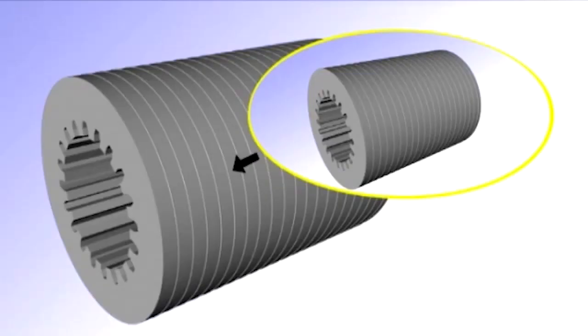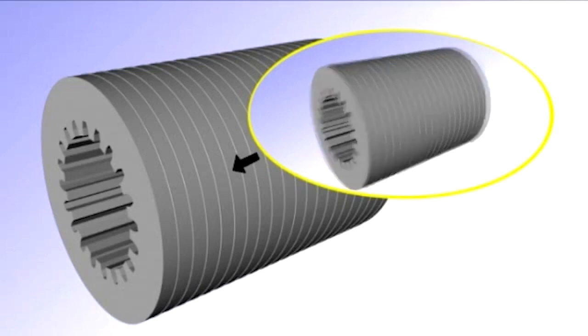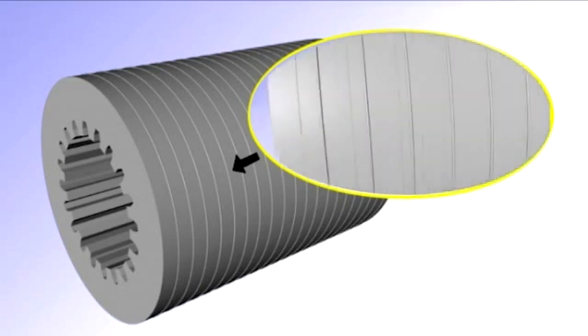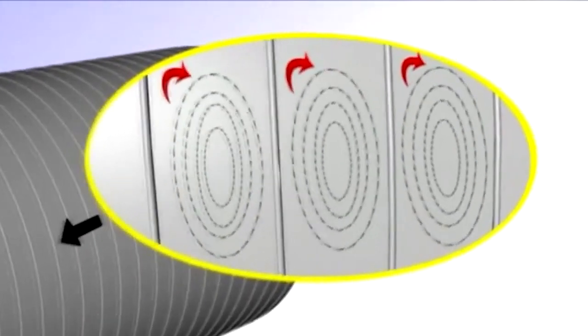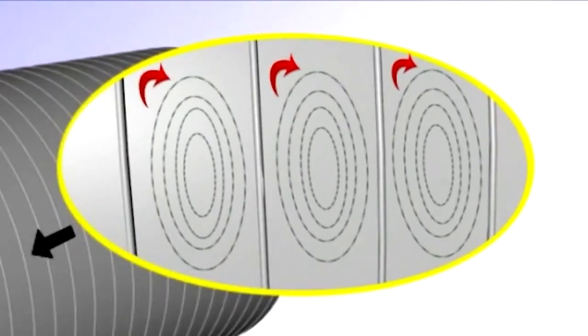Cores are made of high permeability steel in a laminated construction so as to minimize circulating eddy currents which generate localized heating and hence energy loss. To minimize eddy currents, insulation material is used to separate the laminations.